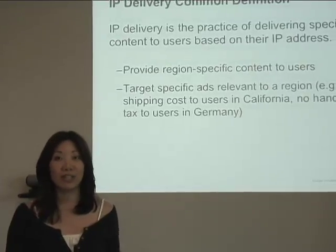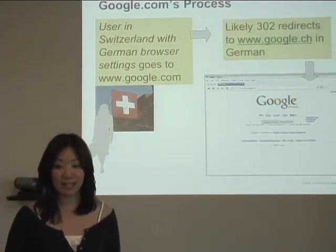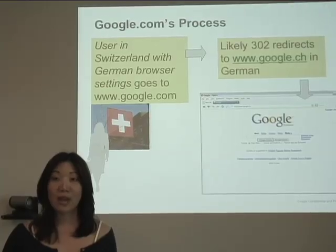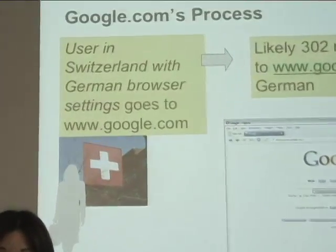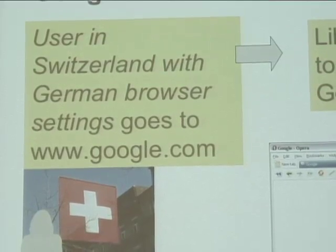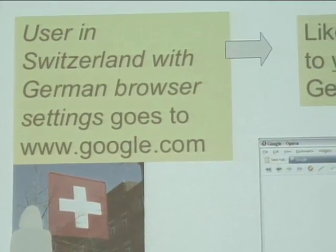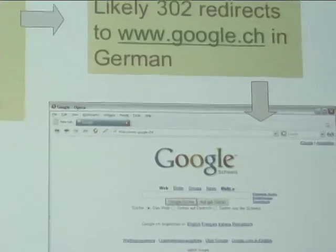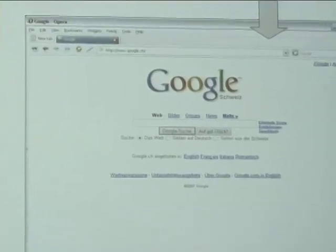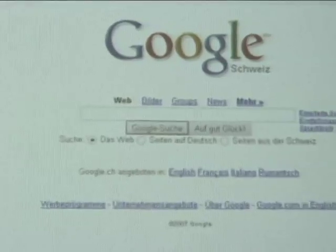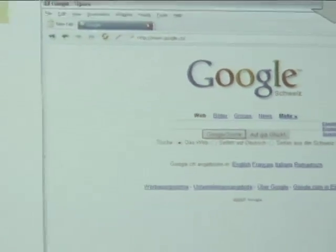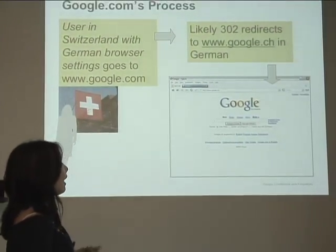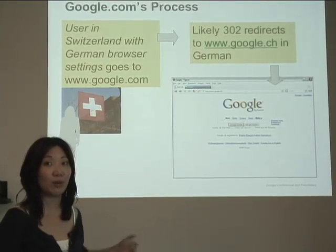Let's make this more concrete by seeing what Google.com actually does. Take the scenario where you're a user in Switzerland with a Switzerland-based IP address and your browser is set to German, which is a language of the region. If you then visit www.google.com, rather than being shown the content of www.google.com, you'll actually likely be redirected to www.google.ch — Switzerland's top-level domain — and you'll see the content in German as well.